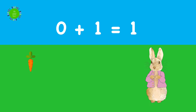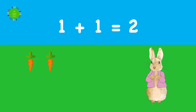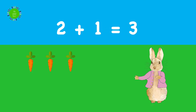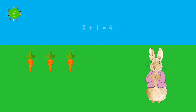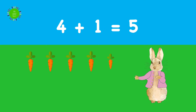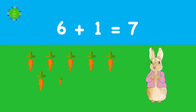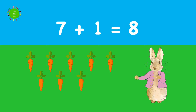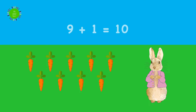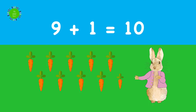Zero and one more is one. One and one more is two. Two and one more is three. Three and one more is four. Four and one more is five. Five and one more is six. Six and one more is seven. Seven and one more is eight. Eight and one more is nine. Nine and one more is ten.